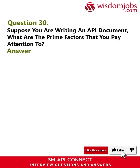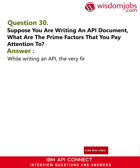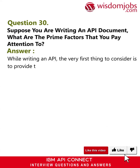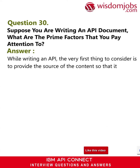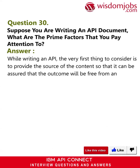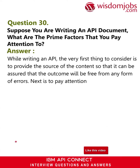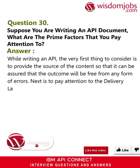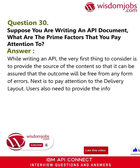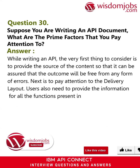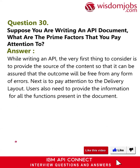Question 30: Suppose you are writing an API document — what are the prime factors you pay attention to? Answer: While writing an API document, the very first thing to consider is providing the source of the content, so that the outcome will be free from any errors. Next is to pay attention to the delivery layout. Users also need to provide information for all the functions present in the document.